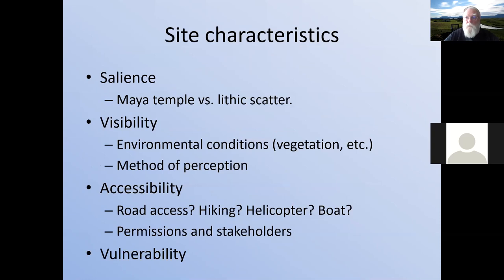Something to think about with sites — what makes them harder or easier to find — are the characteristics of salience, visibility, accessibility, and vulnerability. Salience is about how intrinsically visible or noticeable a kind of site is. Think about the difference between a Maya temple, a big pyramid you can see for miles, and a small scatter of stone tools in the ground that you won't really see until you're within a few feet of it.